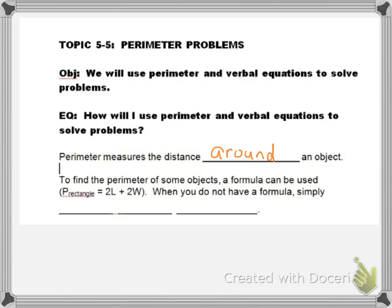If your object is a rectangle, then you can use the formula P equals 2L plus 2W. When you do not have a formula, simply add all sides. You might want to pause right here and write all this down.